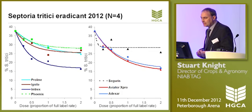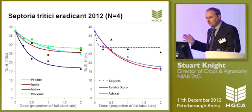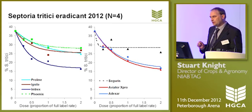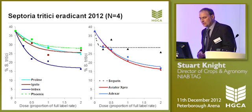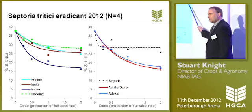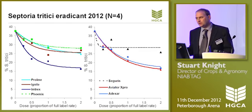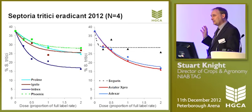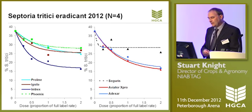Starting with septoria eradicant data, we begin with the standard azoles — prothioconazole Proline and epoxiconazole Ignite. Those two lines are very, very close, giving very similar levels of control. One key thing to point out is the overall levels of control we're getting in terms of eradicant control of septoria: even the best products at double dose are only giving us about 50% control. That's one reason why in 2012 many of you were quite disappointed with your septoria control — in a season with constant infection, wet weather and delayed spraying, it's very hard to control septoria in a largely eradicant situation.